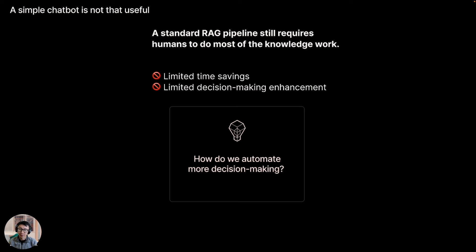If we think about a basic RAG pipeline, the output application is typically just a simple chatbot. But the issue with a simple chatbot is that it's typically not very useful for your end users. A simple RAG pipeline can typically only handle very simple questions and output very simple responses. When you translate that into an end user experience, the user is basically treating this tool as a simple search and retrieval tool, and the knowledge worker using it is responsible for translating the output of that tool into the knowledge work they're responsible for producing.